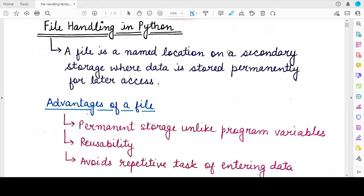Whenever you write a program, the variables are stored in the random access memory, that is the primary memory. And as soon as you end the program, you switch off your system, the variables are lost.